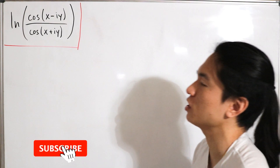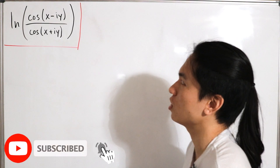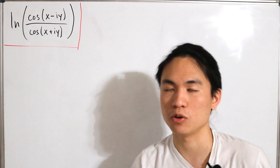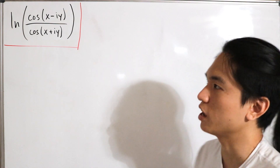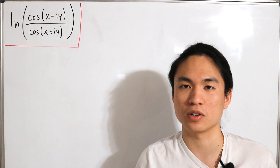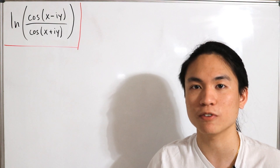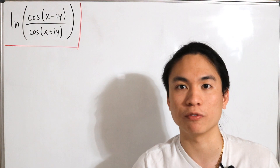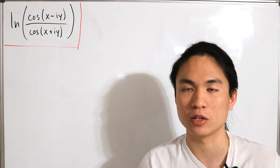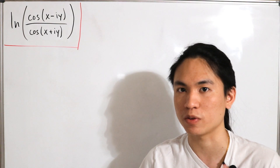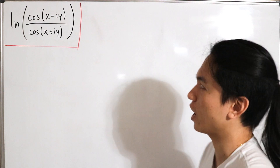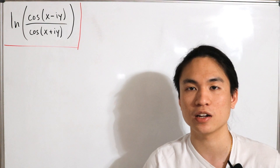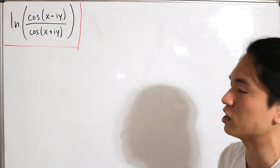We're going to simplify the following expression: the natural log of cosine of (x minus i times y) divided by cosine of (x plus i times y). We're dealing with complex numbers and natural logs, so we'll be using log properties as well as trigonometric identities to simplify this as far as possible.